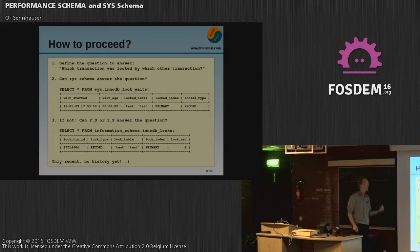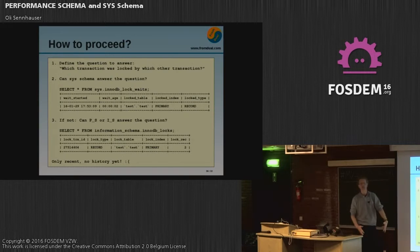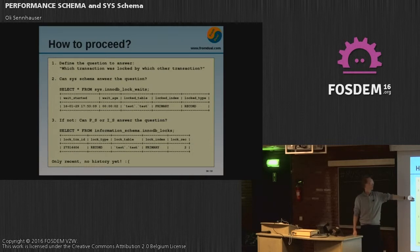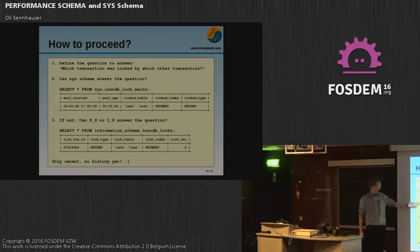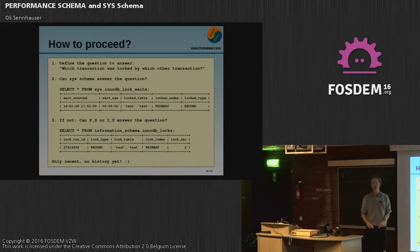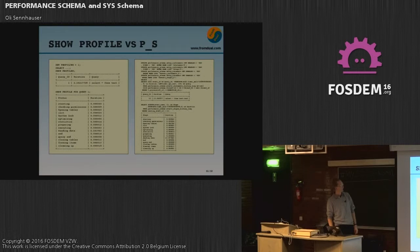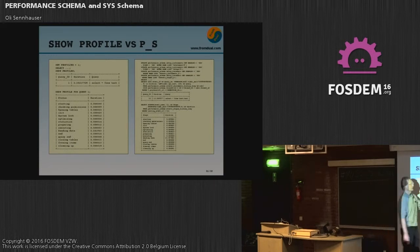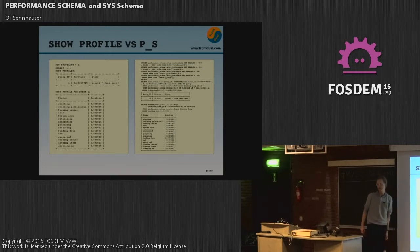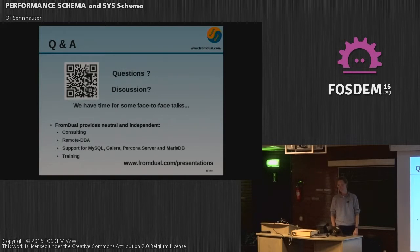A general advice on how to proceed: first define the question you want to answer with the performance schema — for example, which transaction was locked by which other transaction, that was our problem two weeks ago. Then check the sys schema first — is the sys schema answering this question? If not, go to the performance schema or information schema to get the answer. What I wanted to know was transactions locked in the past, not right now when I'm looking. That's not yet provided, so I wrote a feature request for that. Basically, performance schema is totally cool but you need some time to get familiar with it. That's what it's about — performance schema, sys schema. Slides can be downloaded.